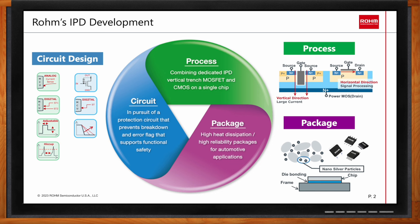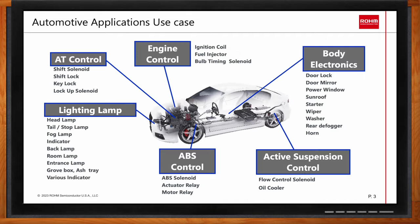IPDs are used in various applications in today's vehicle subsystems. For example, IPDs are used as a switch for ignition coils in engine control units, high beam and low beam control switches in headlamp units, controlling solenoid coils in automatic transmission controls, ABS control, and active suspension systems. We're seeing more and more mechanical relays and fuses being replaced with IPDs recently.